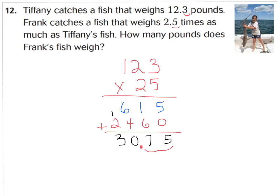Now let's go back to our story problem and see if this makes sense. If Tiffany catches a fish that weighs 12 and 3 tenths of a pound, Frank catches a fish that weighs 2 and a half times as much as Tiffany's, how much does his weigh? This answer makes sense then because 12 pounds, I'm estimating as her total, twice that amount would make his about 24 pounds, but it's plus another half of that amount. So that would be another 6 pounds. So that does make sense. His fish should be about 30 pounds and 75 hundredths. So therefore, this answer works.